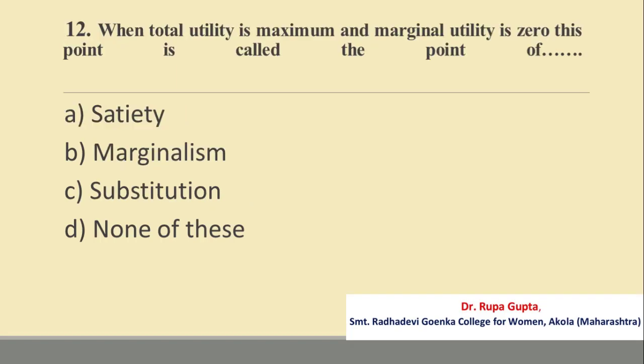Question number 12. When total utility is maximum and marginal utility is 0, this point is called the point of: A. Satiety, B. Marginalism, C. Substitution, D. None of these. The answer is Satiety. Thank you.